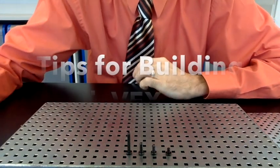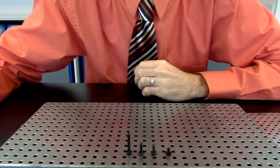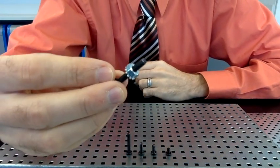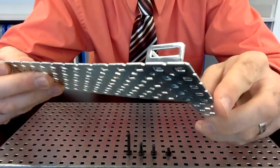Here are a couple of simple but important tips for building with VEX parts. First, screws are used to hold the metal VEX structure parts together.